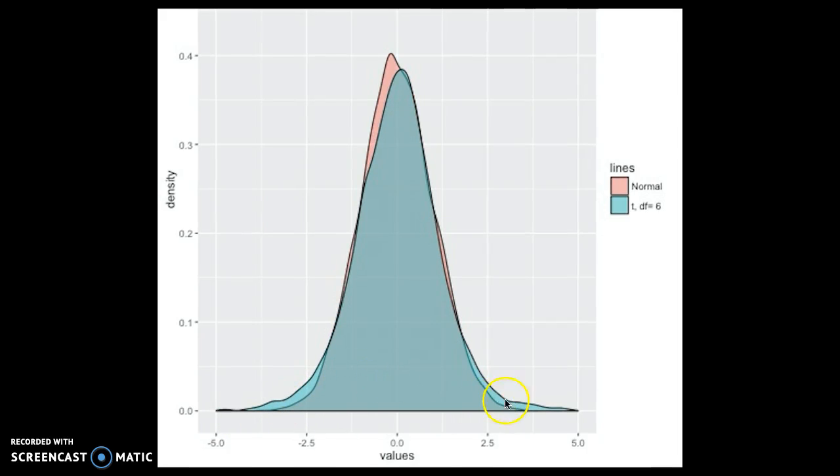At 6 degrees of freedom, those tails are a little bit smaller and it's a little bit closer, but not by a whole lot. By 7, they're looking very close, except in the tails. At 8, still pretty close.